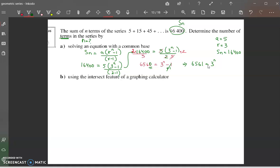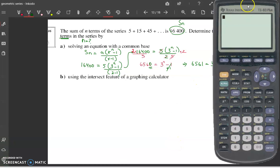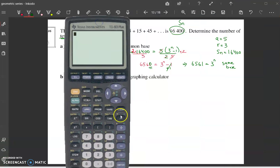Now remember, we did the guess and check method where we try to make them the same base. So you're going to use your calculator here and try to see what to the power of 3 will give me 6561.